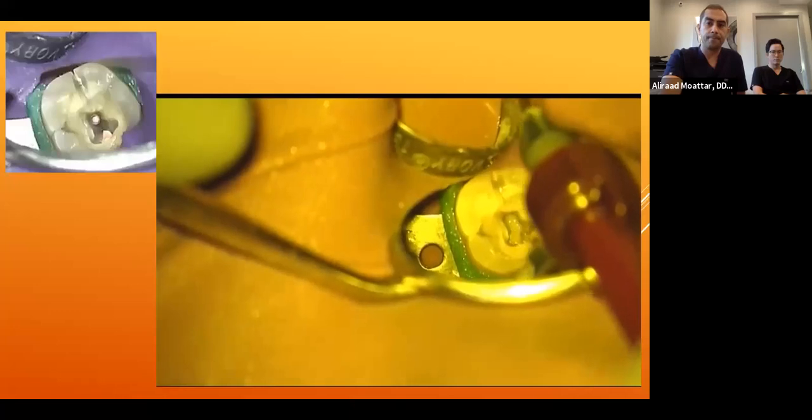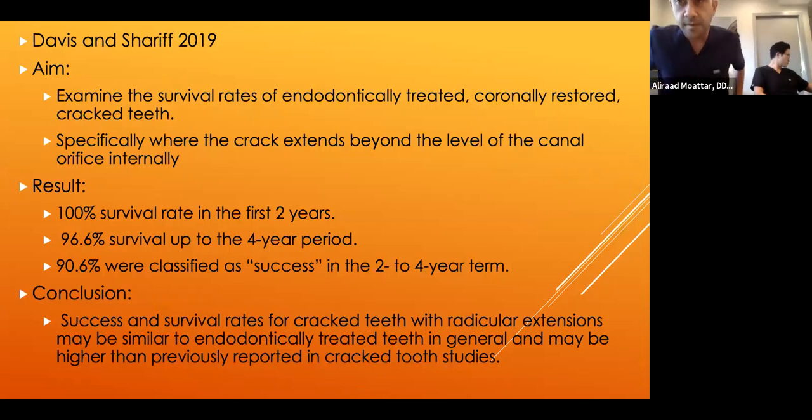The next case, tooth #18, is very similar. I wanted to show a video about how we restore these fractures. After complete obturation, we remove gutta-percha a few millimeters below the fracture line. After bonding with a small composite tip, we inject dual-cure resin material into the canal below the fracture line, as well as the pulp chamber and toward the crack, placed in layers. This is pretty much how we restore it.